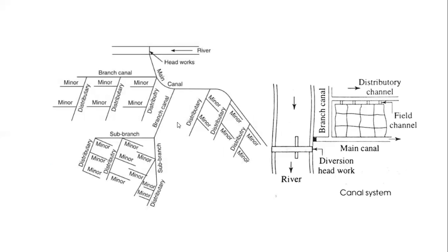This example is well enough to explain those things. We have a river and a headwork, from which water is diverted to the main canal. There are several arrangements of branch canal, then major sub-branch and minor distributories, and finally field canals through which water is fed to the field. Similarly, on the other diagram, a regulated amount of water is supplied through the diversion headwork to the branch canal, major, minor distributory, and then the field canal.